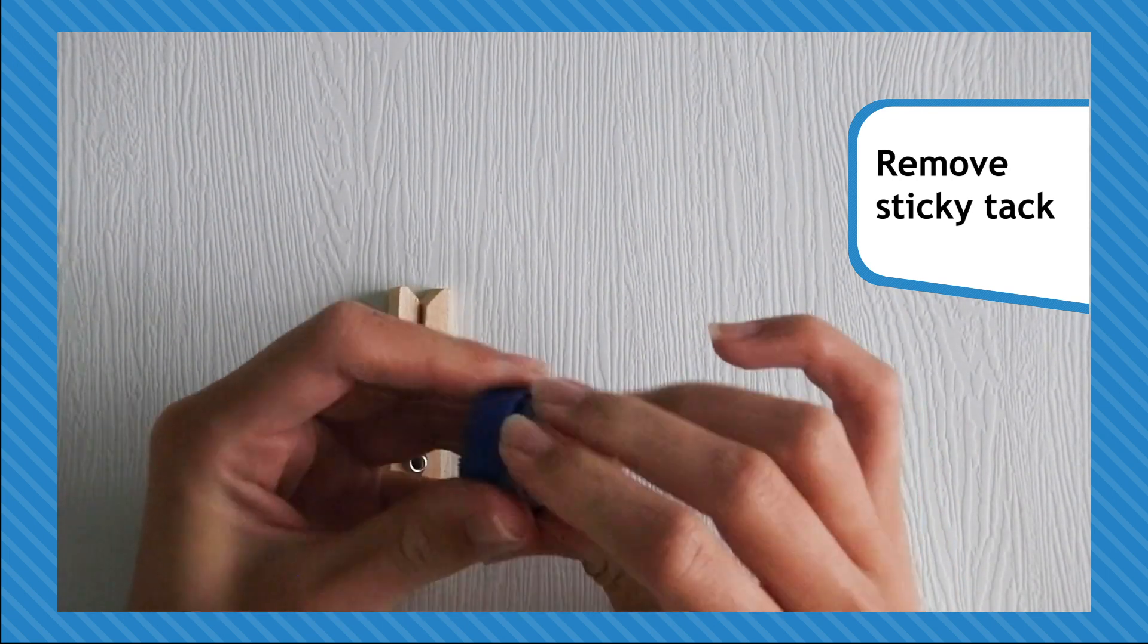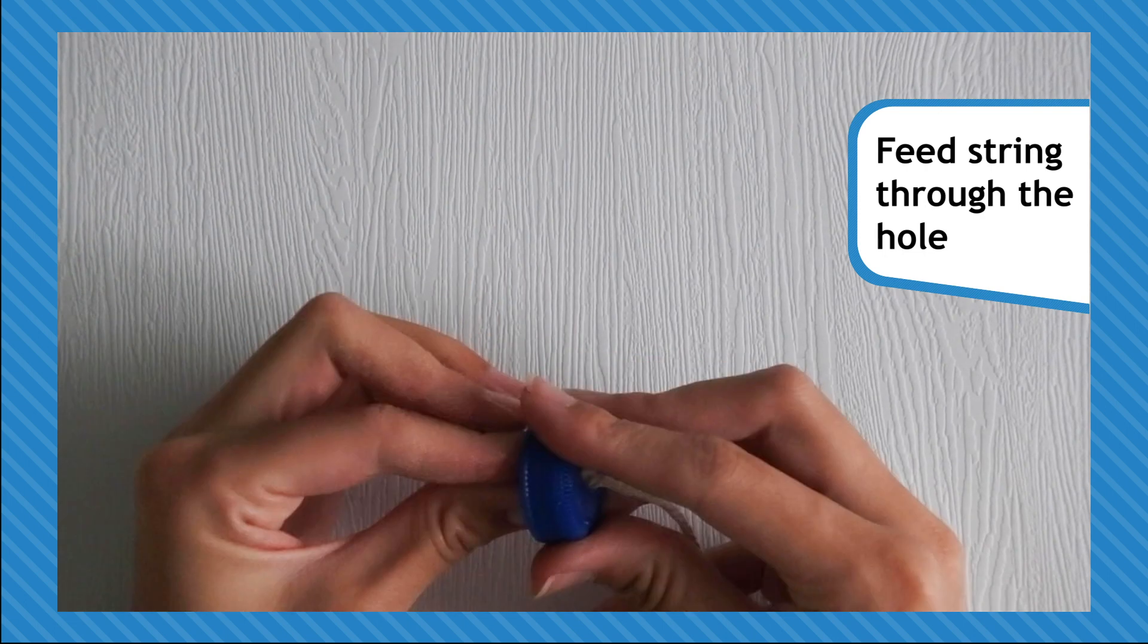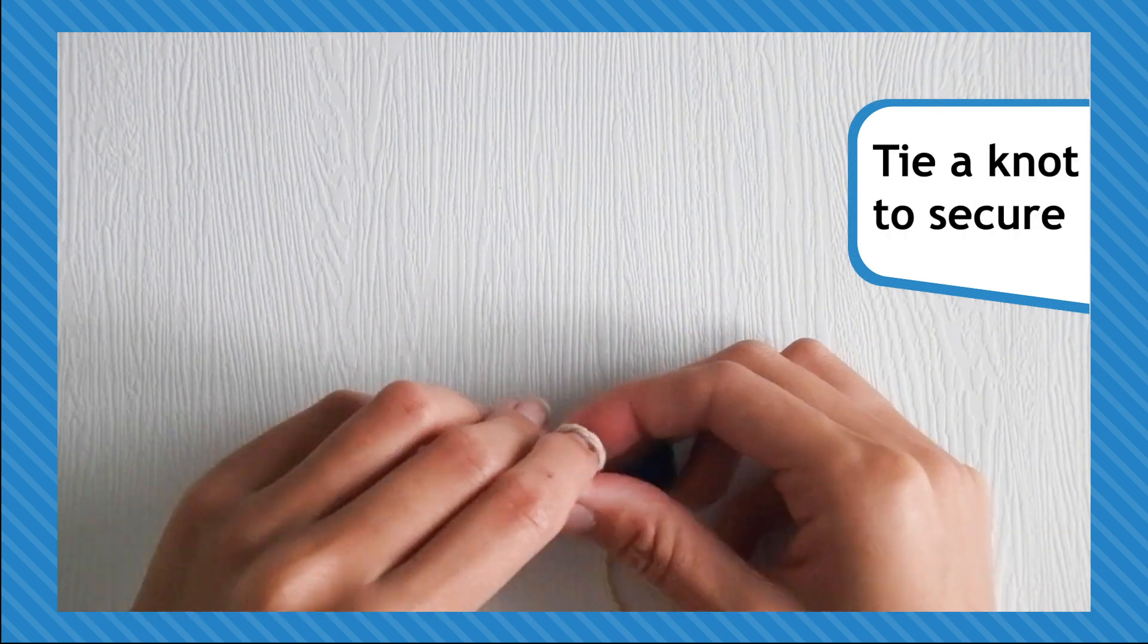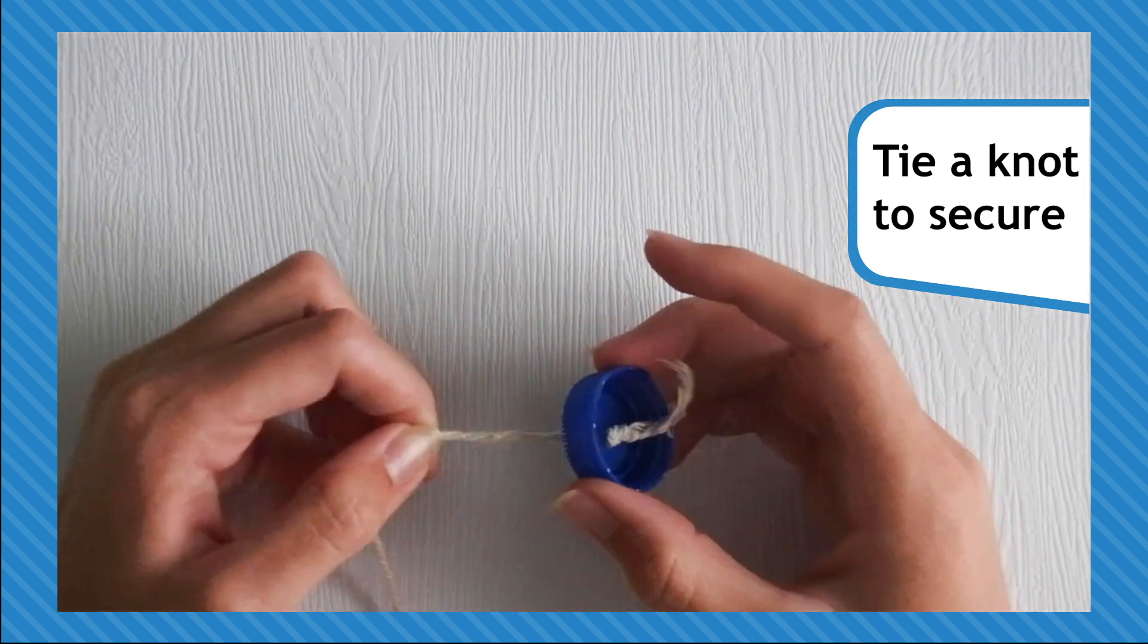Remove the sticky tack from the lid and feed the piece of string through the hole. Tie a knot inside the cap to keep it secure, then screw it back onto the bottle.